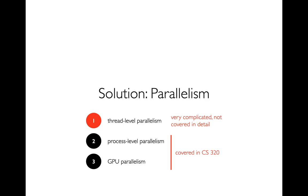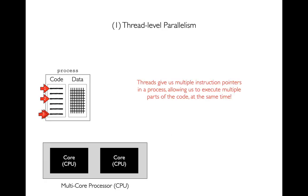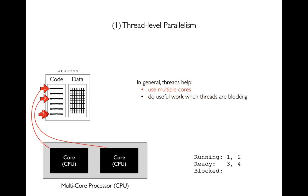The solution to this is parallelism. We want to write our programs so they consist of independent parts that can be worked on at the same time. There are three important ways: thread-level parallelism, process-level parallelism, and GPU parallelism. Let's start with the hard one. With thread-level parallelism, we can have multiple threads per process, and remember that each thread has its own instruction pointer, so I get multiple instruction pointers all running at the same time.